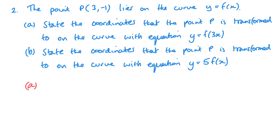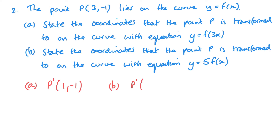State the coordinates that point p is transformed to on the curve with equation y equals f of 3x. It's inside the bracket, so it affects the x — we divide by 3. So my new coordinates of p when transformed are (1, minus 1), because I divide my x values by 3 and can't touch my y values. Looking at part b, we can see that 5 is on the outside, so we multiply my y values by 5 — a vertical stretch. So point p becomes (3, minus 5). Those are my new coordinates.